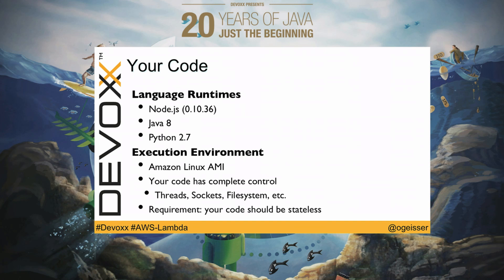What kind of code can you upload? Currently there are three supported language runtimes: Node, Java 8, and Python. Python was added last month — there was a big re:Invent conference from Amazon in the United States, which is always a time of many announcements, and Python support was announced there. In the upcoming months, I assume there will be additional languages supported, like Go or Ruby.